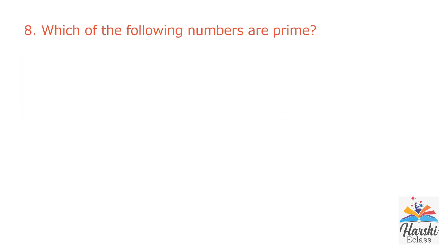Question 8: Which of the following numbers are prime? A: 23. The number 23 has only two factors: 1 and 23. So it is a prime number.